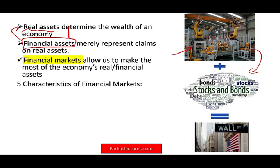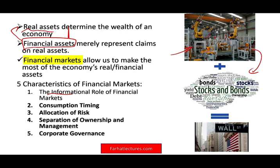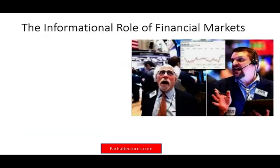The financial market has five characteristics: it plays an informational role, it helps us in consumption timing, it helps with the allocation of risk, it helps with the problem of separation of ownership and management, and it helps with corporate governance. We are going to look at each one of these topics separately, starting with the informational role of the financial market.